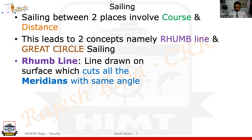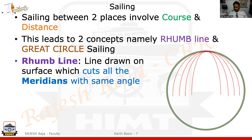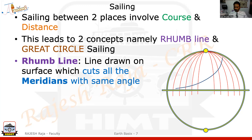Rhumb line, basically, on the surface of the Earth — it is a line drawn on the surface of the Earth, and this line is going to cut all the meridians it passes with exactly the same angle. The course is the angle measured at the vessel from the true north in a clockwise direction, up to the fore-and-aft line of the ship.